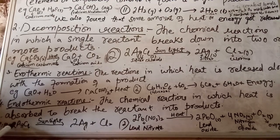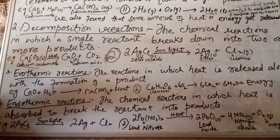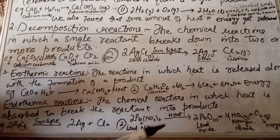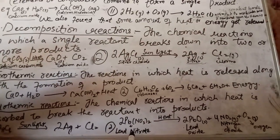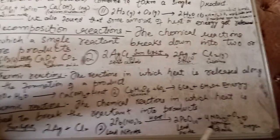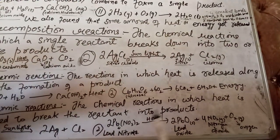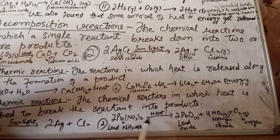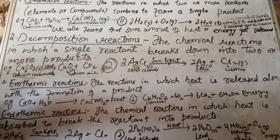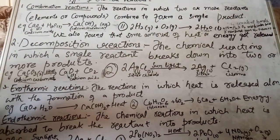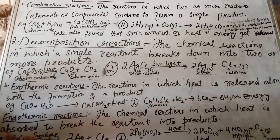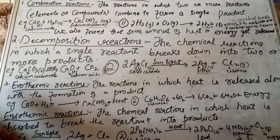Here, sunlight is absorbed to carry on the reaction — the energy or sunlight acts as an activator. Another example: when we heat lead nitrate, it breaks down into lead oxide, nitrogen dioxide, and oxygen gas, and heat is absorbed in the reaction. In all reactions, old bonds are broken and new bonds are formed, which is why new products are formed.